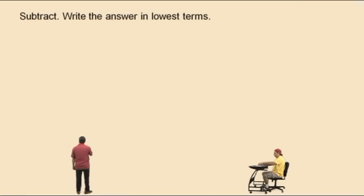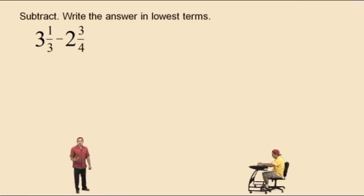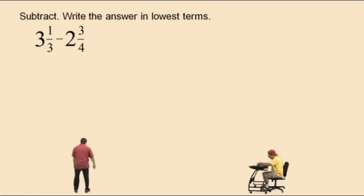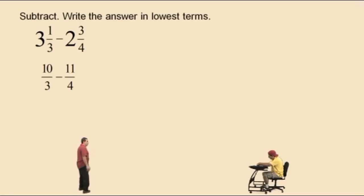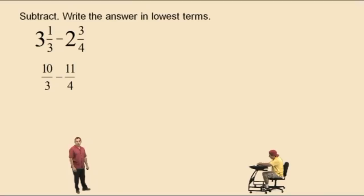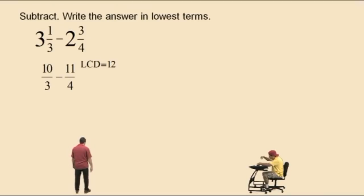Let's do some more mixed numbers — this time we're doing a subtraction. Our first approach will be to change the mixed numbers to improper fractions first. We go 3 times 3 is 9, so 9 thirds plus 1 third is 10 thirds. Subtract 2 and 3 fourths: 4 times 2 is 8, so 8 fourths plus 3 more fourths is 11 fourths. Now we have 2 improper fractions with different denominators — so we have to do what, Charlie? Find the LCD. That's right, and what's the LCD? 12.